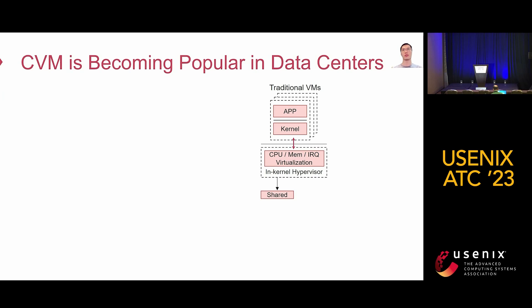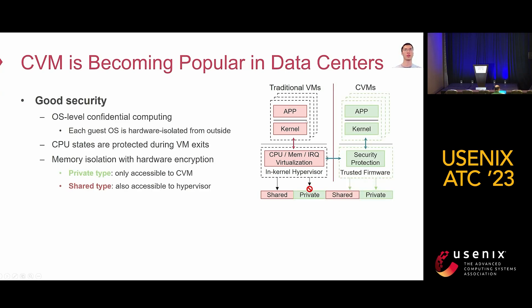To address the security issue, CVM is proposed and becoming popular in data centers. Compared to traditional VMs, CVMs provide good security by enabling OS-level confidential computing. Specifically, each guest OS in the CVM is hardware isolated from outside. CPU states such as registers are protected during VM exits, and memory isolation is enforced with hardware encryption. Overall, we can divide the memory into two security types: the first is a private type that is only accessible to CVM, and the other is a shared type that is also accessible to untrusted hypervisors.